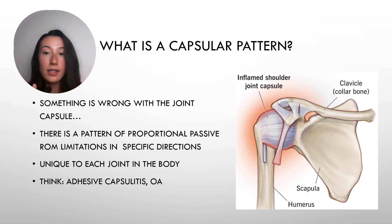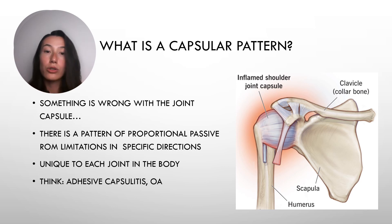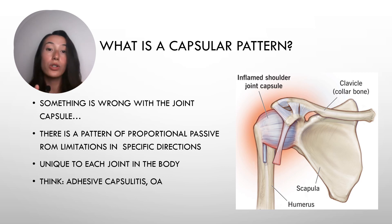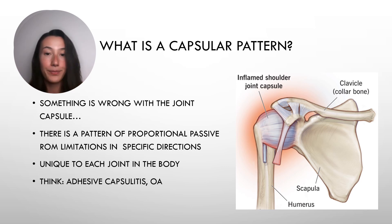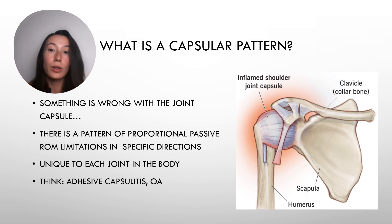Now compare this to when you injure a muscle. For example, you get a quadriceps strain. You should know that all muscles can do is just stretch and strengthen. So if you stretch or try to apply resistance to a person's quadriceps that has been injured, you can assume there is going to be some limitation with these respective tests, and the person is probably going to experience some pain. The same idea goes with an affected joint capsule — there are certain ranges of motion unique to each specific joint that are going to be more affected than others.